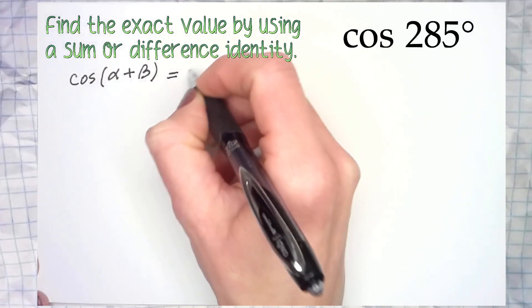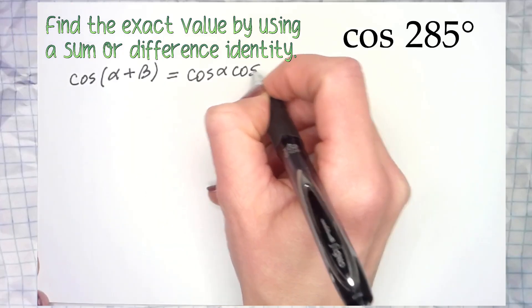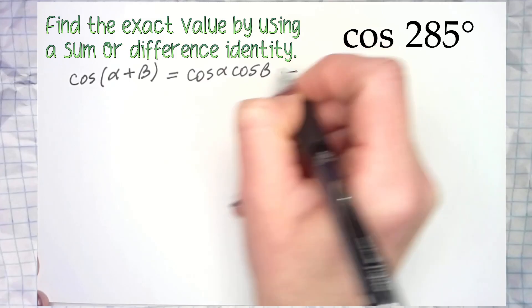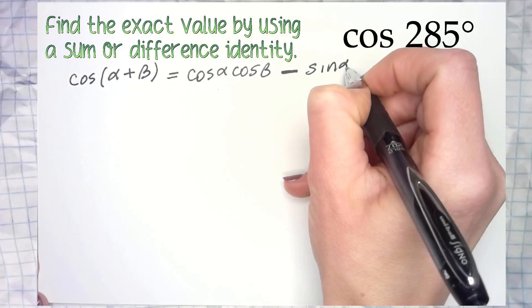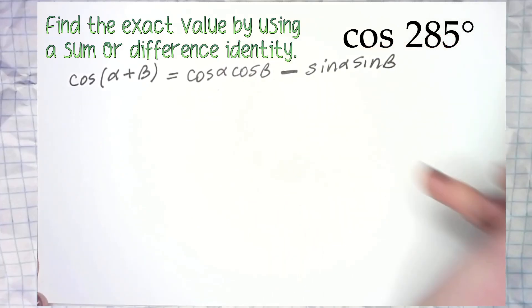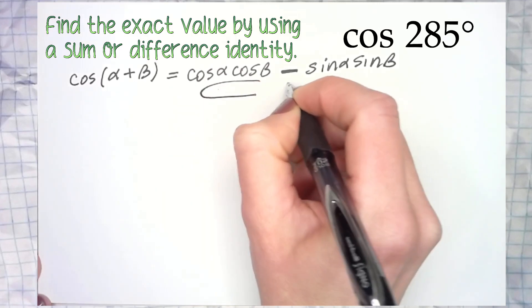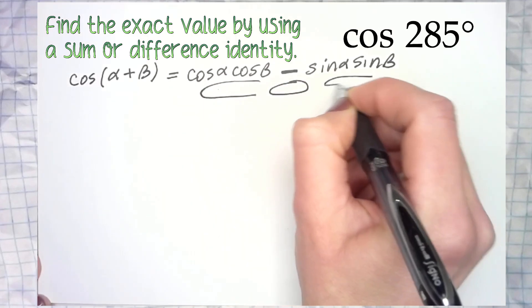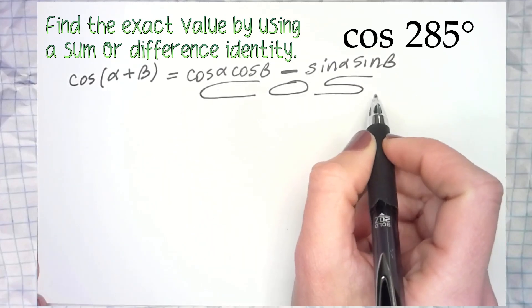But I always remember: cosine, we're going to get the opposite sign for it in the middle. Sine keeps the same sign. Hopefully you know what I'm talking about. Another thing that you can use to remember is COS - for cosine you have your cosines, opposite sign, and then your sines. Look at that cleverness! Oh my gosh, we're so smart, go us.